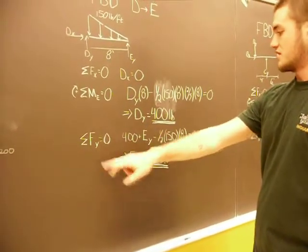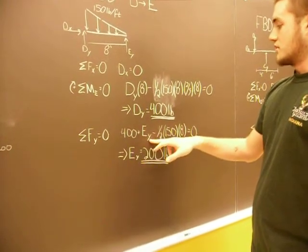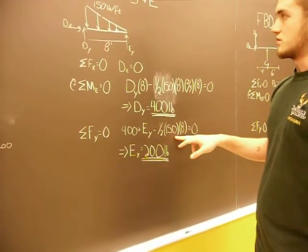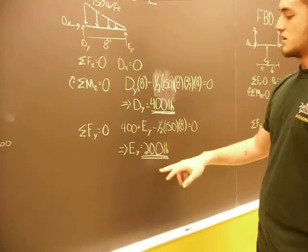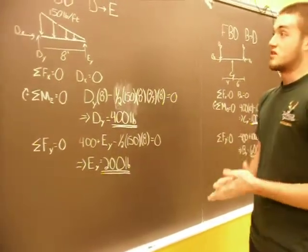And you do your sum of your forces in your Y. You got your 400 acting up, plus your EY, plus your triangular loading acting down. And EY equals 200. That takes care of that free body.